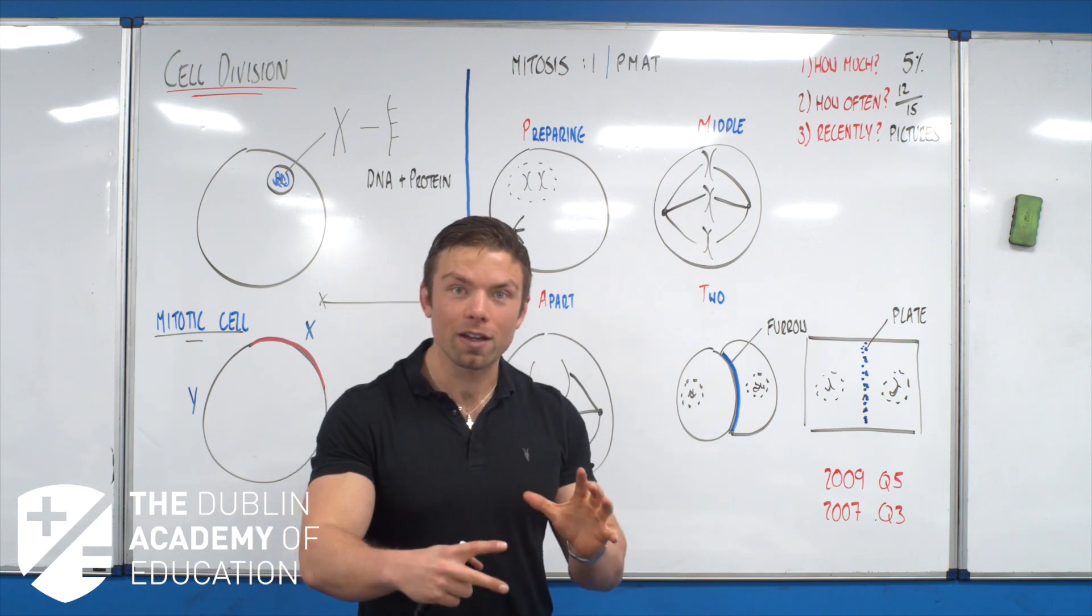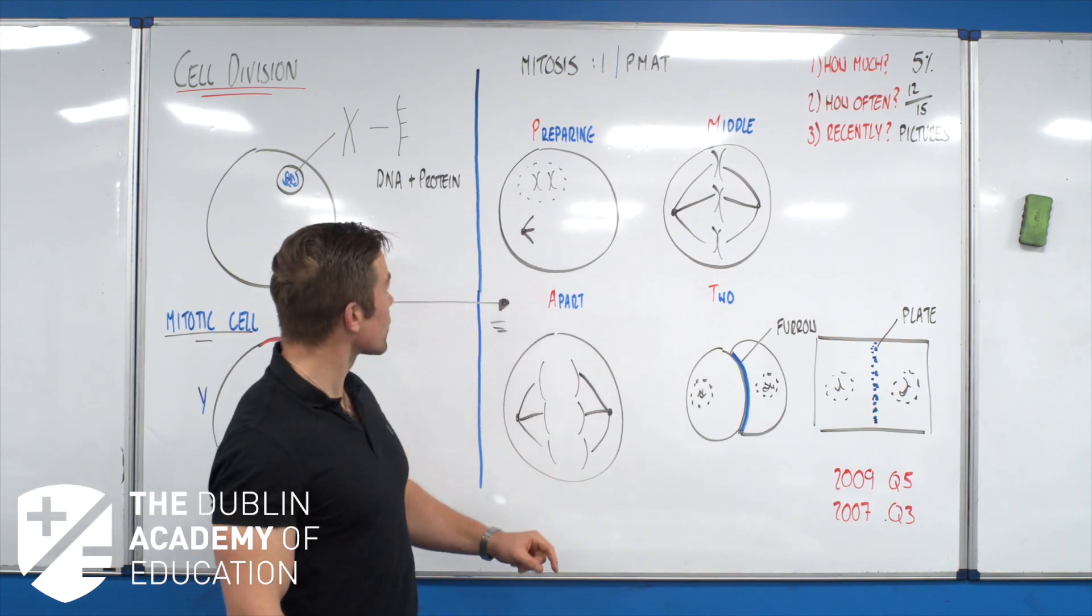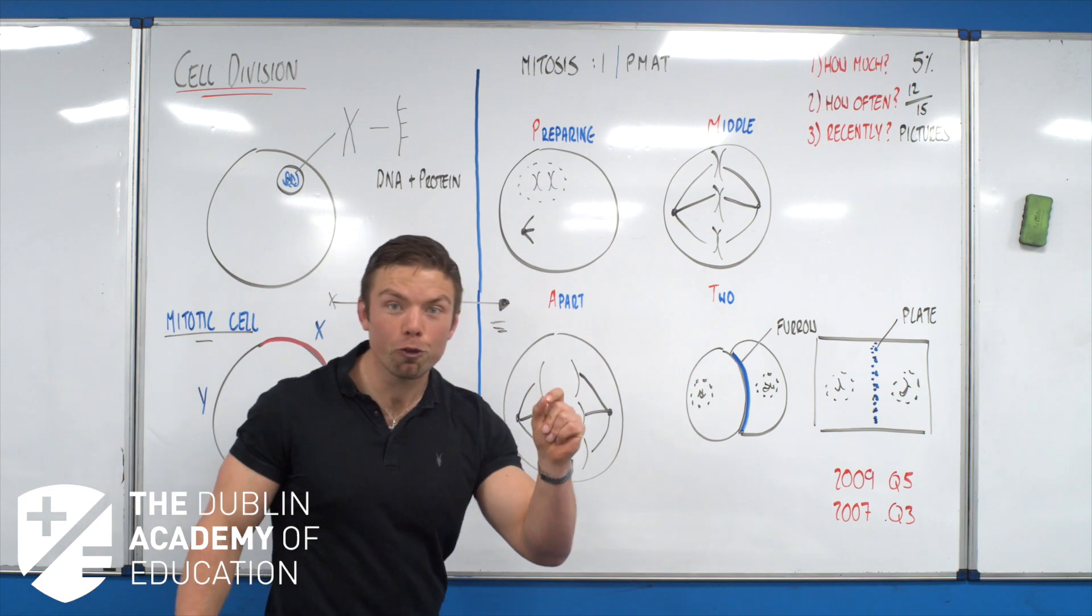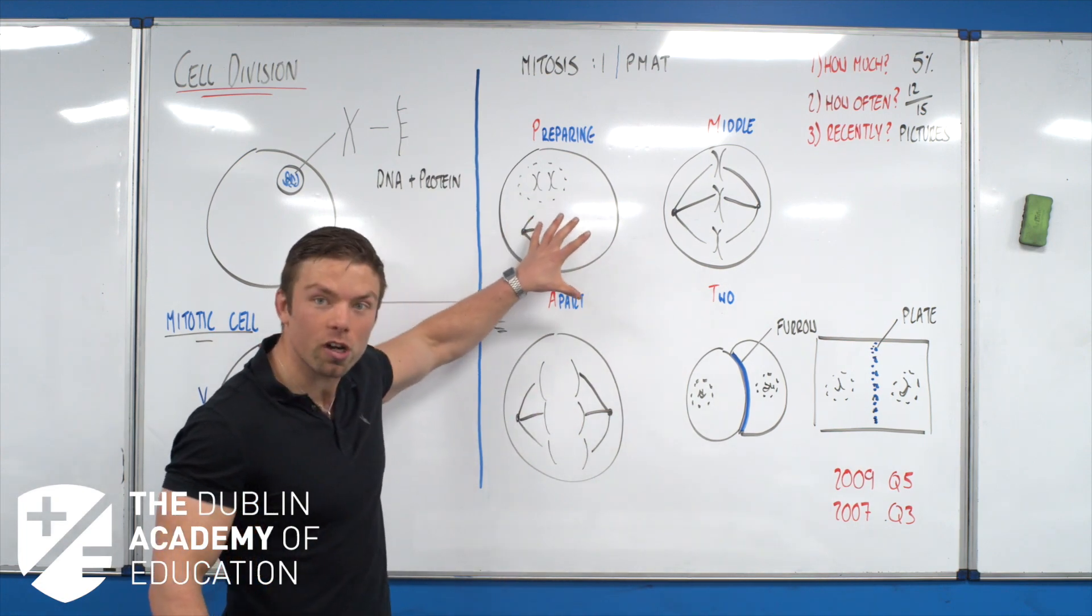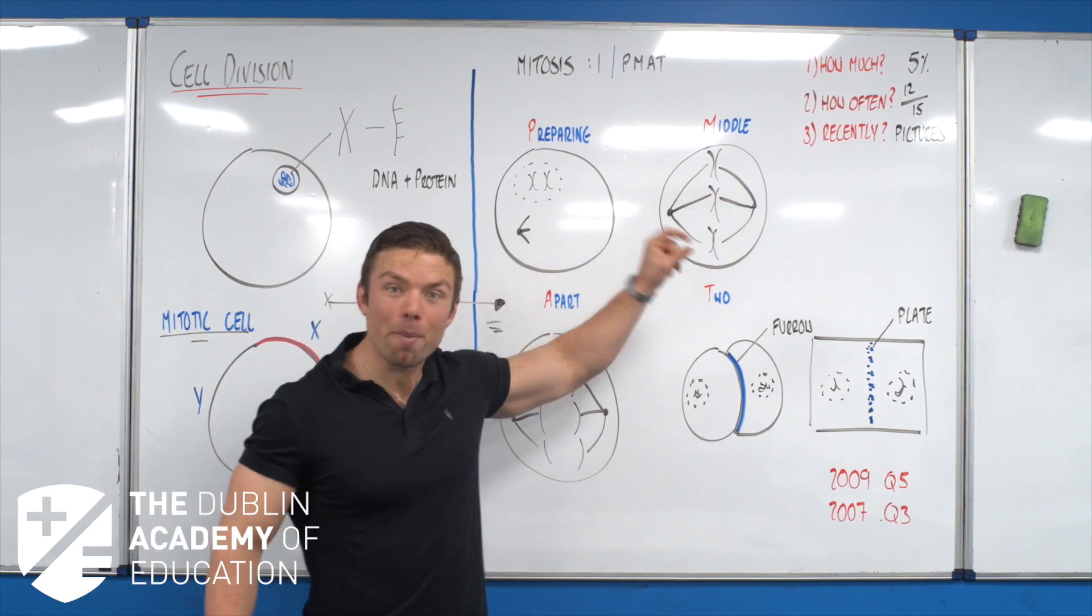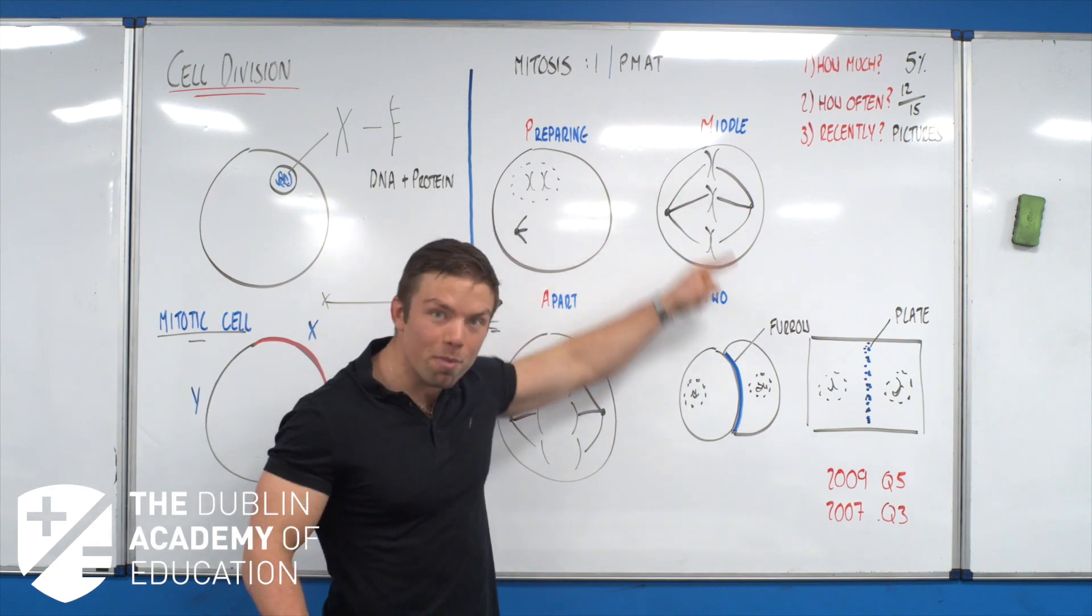In terms of mitosis, we're saying like P for prophase, P for preparing, so the diagram is preparing. M for metaphase, M for the stuff is down the middle, that's how we recognize that.